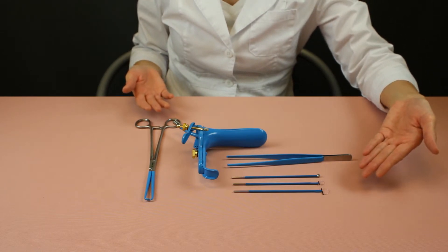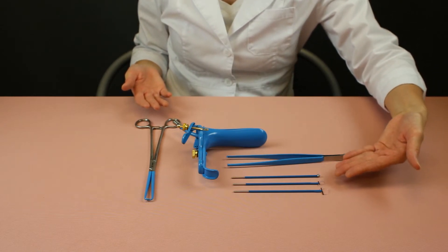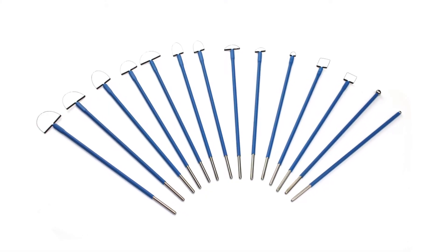MedGyne's top-of-the-line electrodes come in three styles: loop, square, and ball.